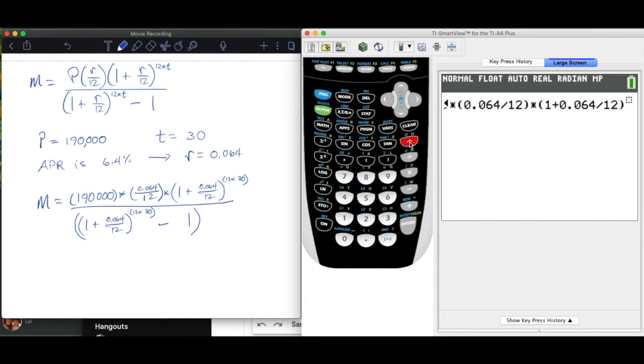So in that cursor, we're going to be real deliberate. We're going to go parentheses 12 times 30, because the 30 is the t, and that closes the parentheses.